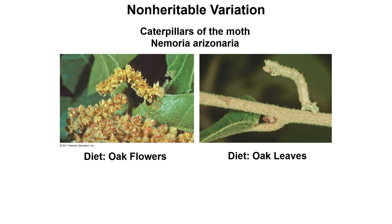Not all variation is heritable. For example, here are two individuals belonging to the same species of caterpillar — Nemoria arizonaria — that are genetically identical yet look different. Your first guess might be that it has to do with DNA or gene expression, but it actually has nothing to do with what they've inherited — it has everything to do with their diet. This illustrates that some phenotypic variation is due to environment, not genetics.